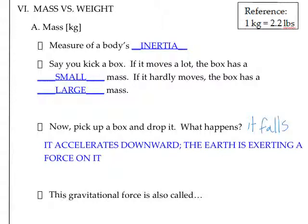Specifically, the object actually accelerates downwards, so it's going to get faster and faster as it's falling toward the surface of the Earth. The reason that it does that is because the Earth is exerting a force on it, and it's this gravitational force that we call weight.